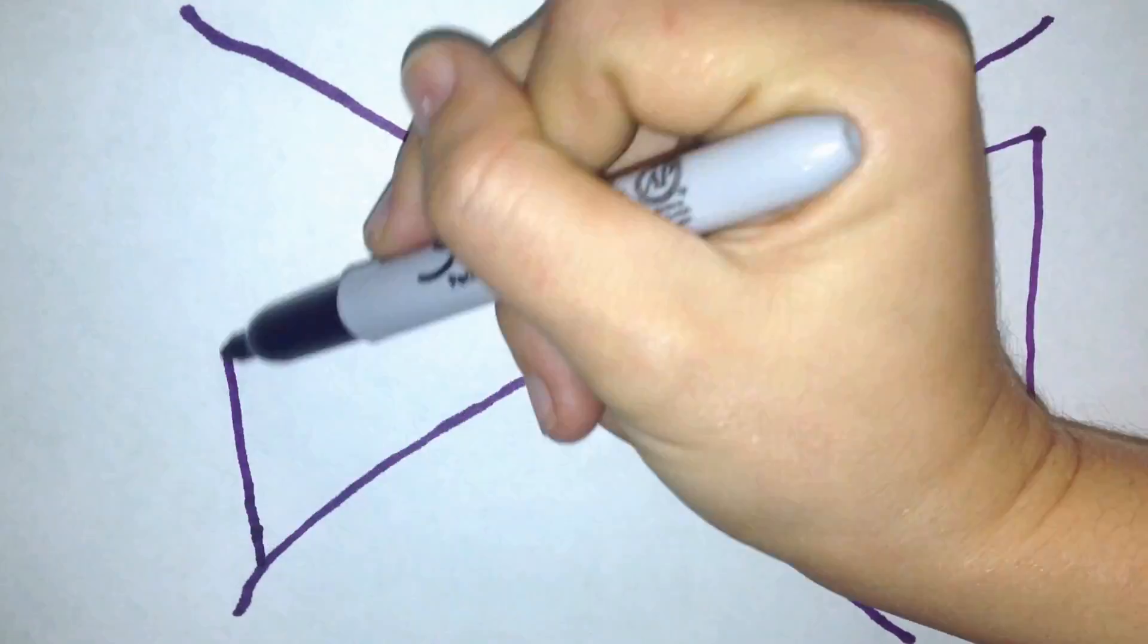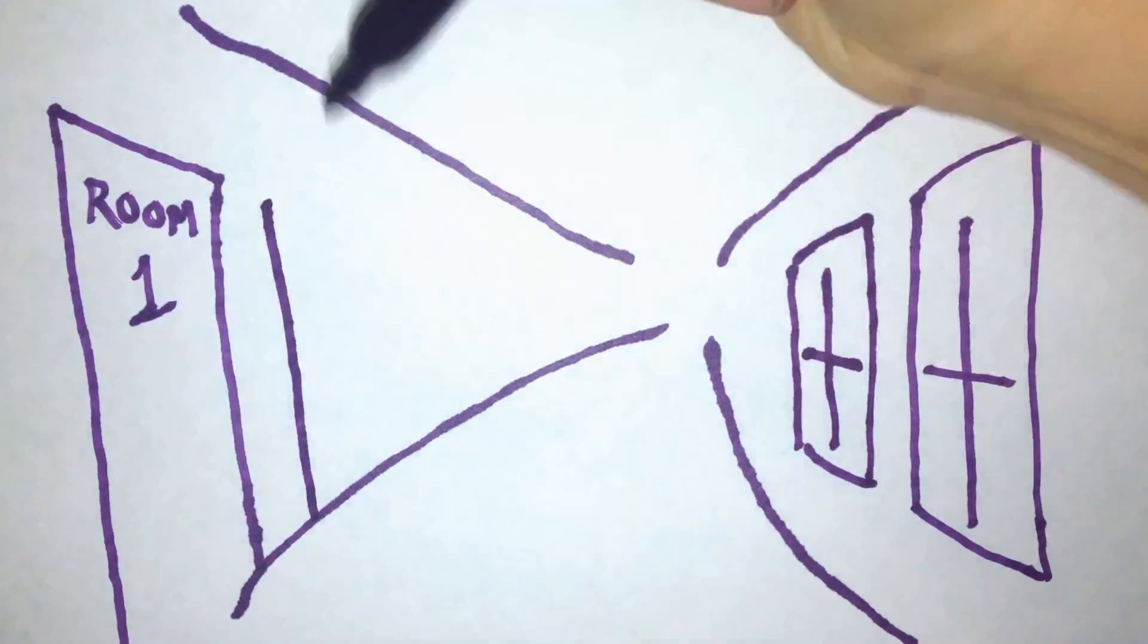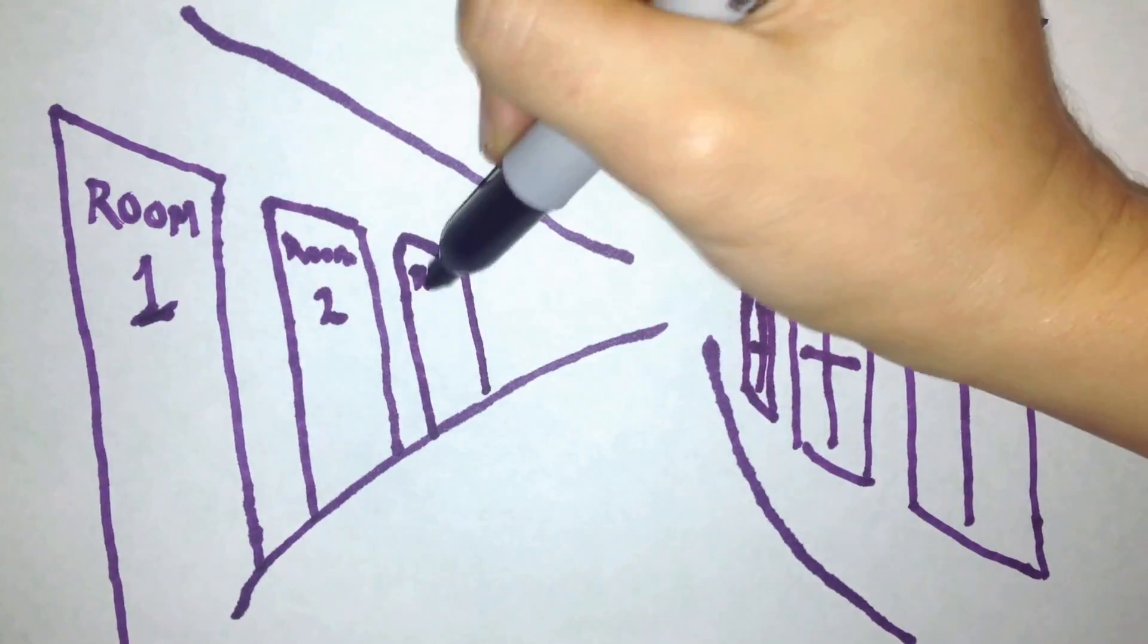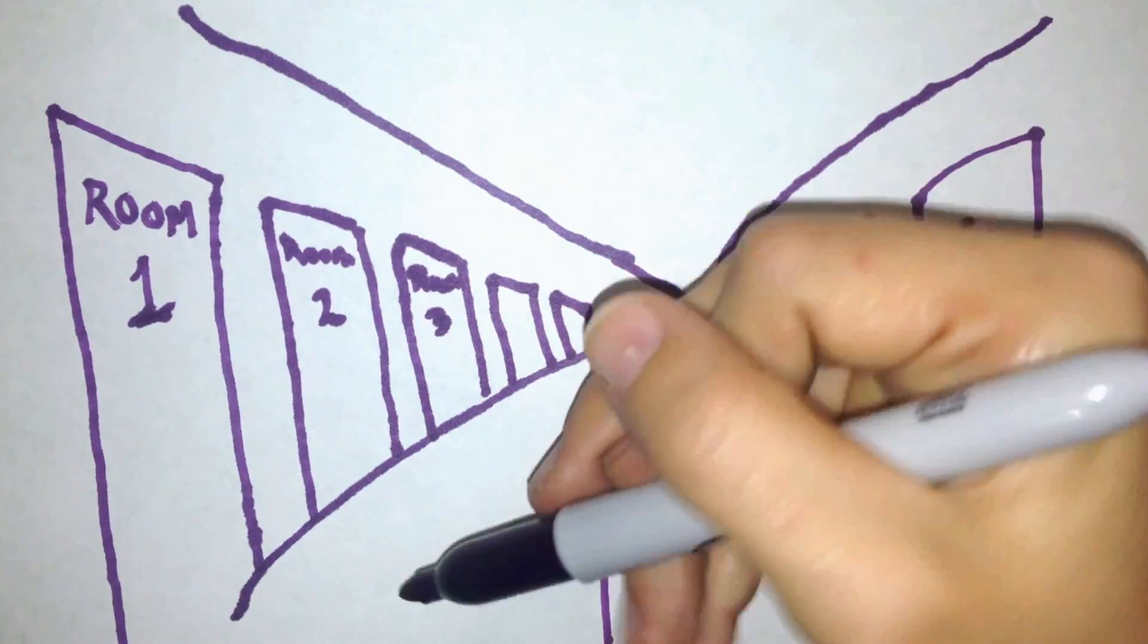The second door on your left is room two. The third is room three, and so on. And it keeps going forever.